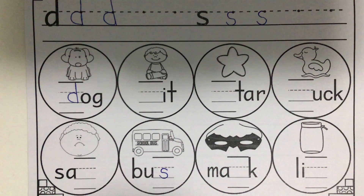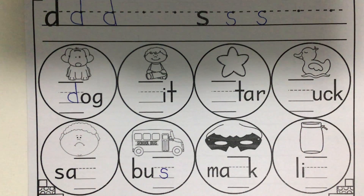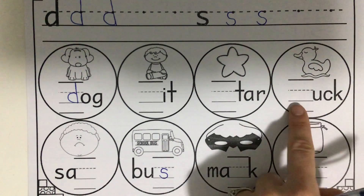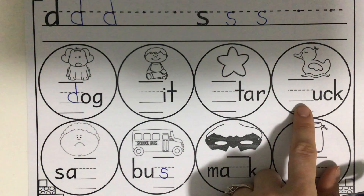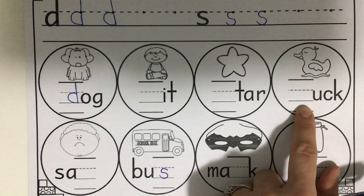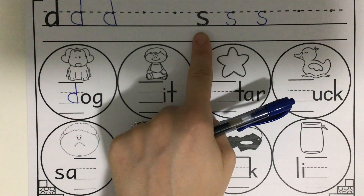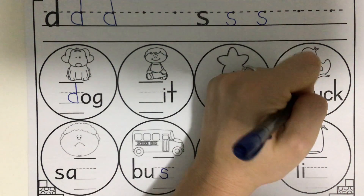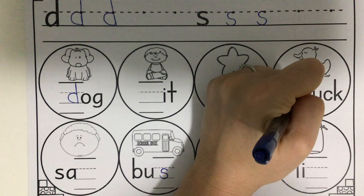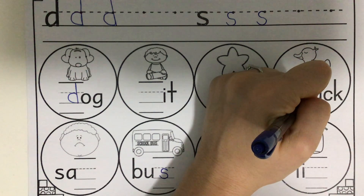Let's do one more together. What is that a picture of? Duck. Take a look at the letters that spell duck. What sound is missing? Is the beginning sound missing? Yes. So what sound does your mouth make at the beginning of the word duck? D or S? If you said D, you are correct. I hear D at the beginning of duck. So let's make the lowercase letter D together — it starts just like a C, goes up to the skyline, and traces back down to the grass line.